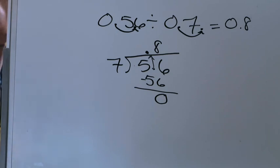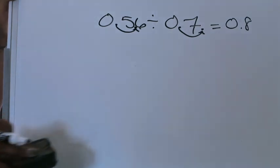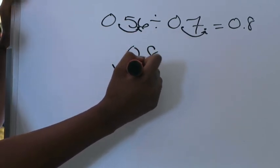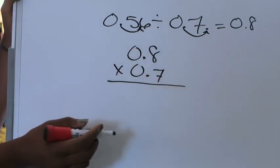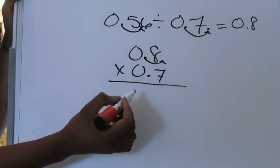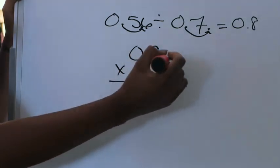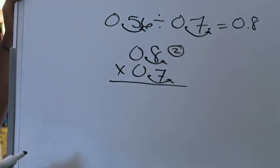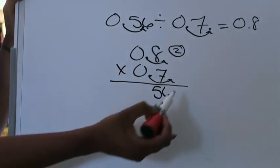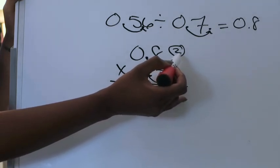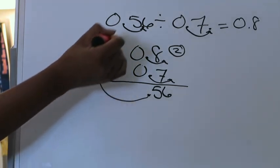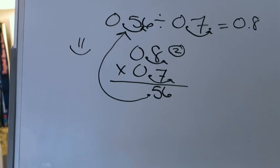Now I want to check my answer, so I'm going to take my quotient and multiply it by my divisor — 8 tenths multiplied by 7 tenths. I know how to multiply decimals from chapter four. I'm going to move this decimal point to the right one time, move this one to the right one time, and tell myself I moved a decimal point a total of two times. Then I multiply as if these are whole numbers: 8 times 7 is 56. I go back and move the decimal point in two times, and my answer is correct because this matches my dividend.